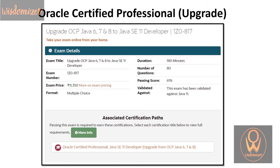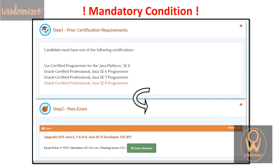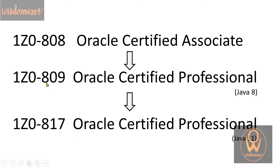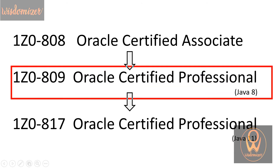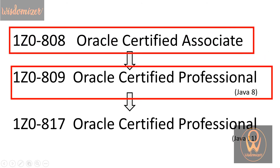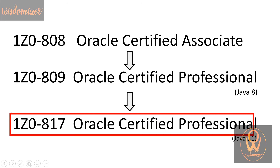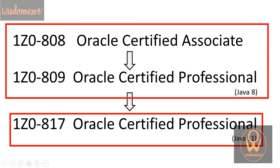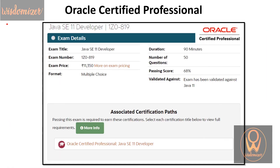There are three mandatory conditions: to pass 1Z0809 for Java 8, you need to first pass 1Z0808 — Oracle Certified Associate. And if you want to pass 1Z0817 — Oracle Certified Professional Java 11 — you need to have passed both 1Z0808 and 1Z0809. So now you should have a clear understanding of these mandatory conditions.